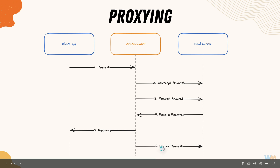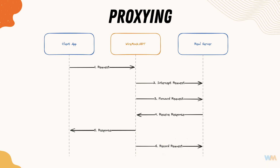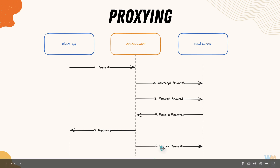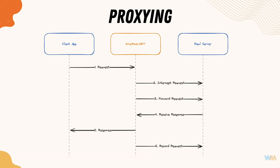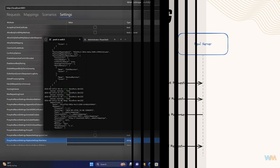While doing that, WireMock.NET also records the request and optionally saves the request and responses into a mapping file. As we saw in earlier videos in this series, we can save all mappings to a physical file which can then be replayed using the WireMock.NET tools. All of this is fully supported with WireMock.NET — and that's exactly what proxying means.